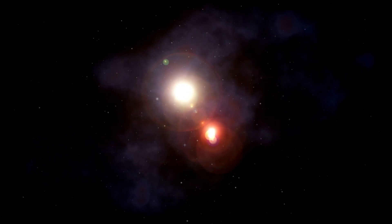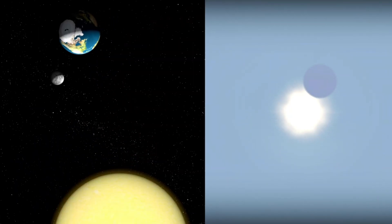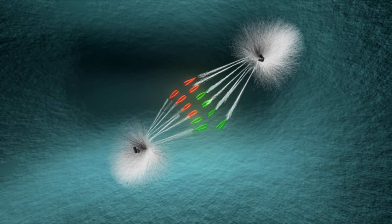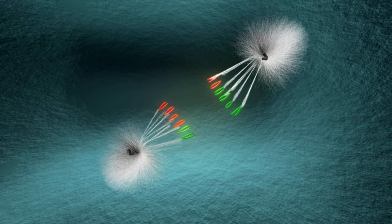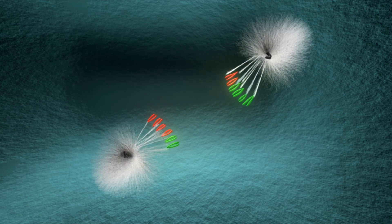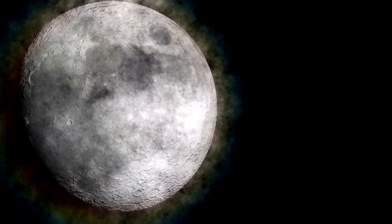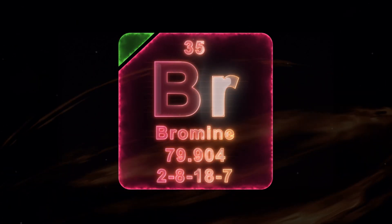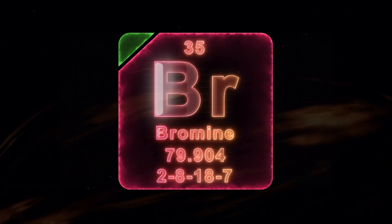Since the exoplanet was 20 times nearer to its star than Earth is from the Sun, Proxima b was believed to be tidally locked with a permanent day-side and night-side. This is similar to our Moon, which faces Earth with the same side at all times. A hypothetical technological civilization on Proxima b might transfer heat and electricity from the day-side to the night-side using photovoltaic cells that generate electricity out of starlight.